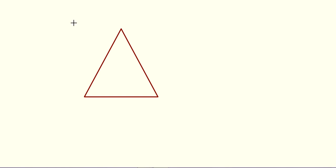Next topic is classification of triangles. The first type is acute angle triangle. In an acute angle triangle, each angle is less than 90 degrees. If all three angles are less than 90 degrees, that triangle is called an acute angle triangle.